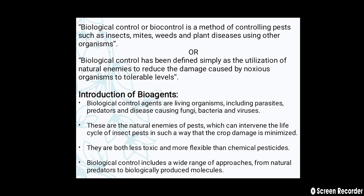Firstly, what is the meaning of biological control? Biological control or biocontrol is a method of controlling pests such as insects, mice, weeds and plant diseases using other organisms. Our second definition: biological control has been defined simply as utilization of natural enemies to reduce the damage caused by noxious organisms to a tolerable level.